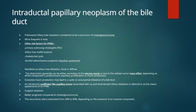We'll talk briefly about intraductal papillary neoplasm of the bile ducts, or IPMB. It is a pre-invasive bile duct lesion considered a precursor of cholangiocarcinoma. It is more frequent in Asians. Other risk factors include primary sclerosing cholangitis, biliary tree malformation, choledochal cysts, and familial adenomatous polyposis syndromes. It usually manifests as biliary tree dilatation, either focal or diffuse. The biliary dilatation can be attributed to viscous mucin secretion or mass effect from the solid component within the dilated ducts. It also shows a characteristic cauliflower-like papillary tumor with upstream and downstream biliary dilatation.